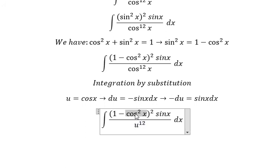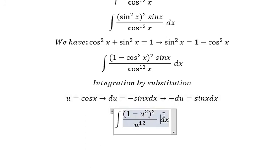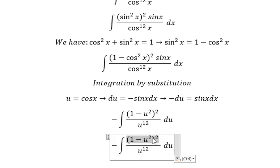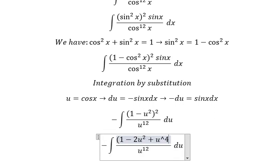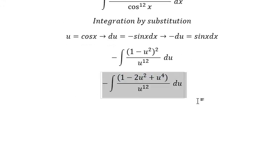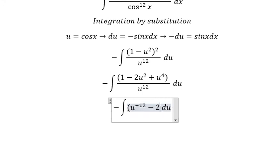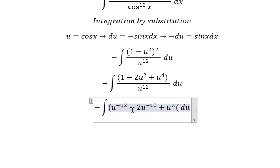This one we have u squared. Sin x dx we change by negative du. Now we need to expand this one. So: 1 divided by u to the power of 12, u squared divided by u to the power of 12, u to the power of 4 divided by u to the power of 12. We will have u to the power of negative 12, minus 2u to the power of negative 10, plus u to the power of negative 8.